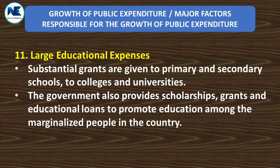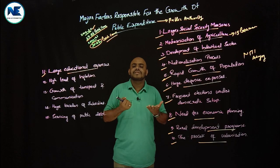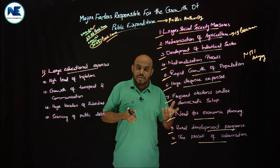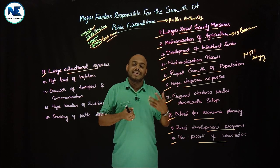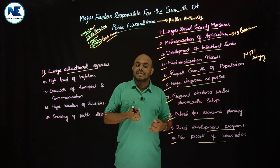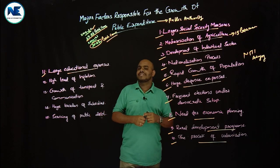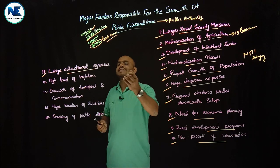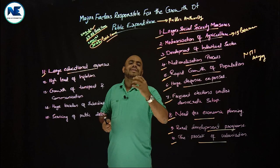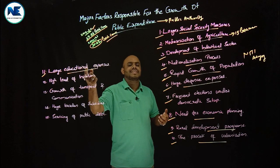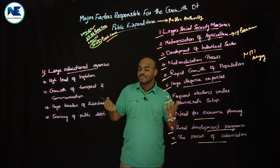In the education sector, the government spends for primary schools, upper primary schools, high schools, higher secondary schools, colleges, universities, and research programs — crores and crores are spent on educational expenses. You can substantiate this with data from the latest union budget's education sector allocation. This is also a very important factor responsible for the growth of public expenditure.